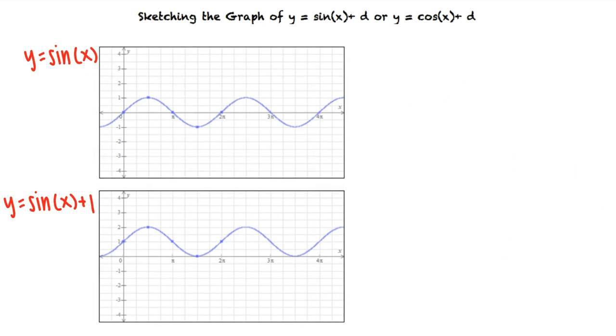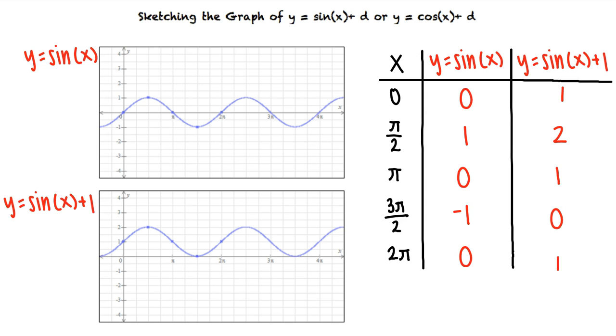We can visually see that the graph of sine of x plus 1 is translated upward one unit from the graph of sine of x. If we compare their key points, we also see that we have added one to each output value for the function y equals sine of x plus 1 compared to the output values of the function y equals sine of x.